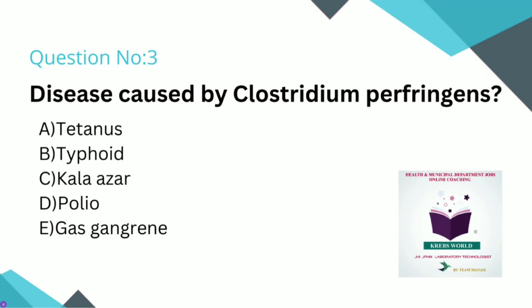Polio is caused by poliovirus. Gas gangrene is caused by Clostridium perfringens — this is a severe clinical condition.